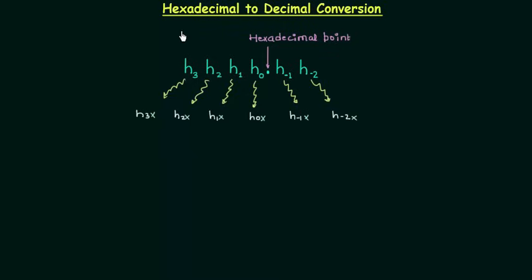In this presentation we will study hexadecimal to decimal conversion. Let's say this is the hexadecimal number. H0, H1, H2, H3 are the coefficients of the integer part. H-1 and H-2 are the coefficients of the fractional part, and we want the decimal equivalent of this hexadecimal number. I will multiply coefficient H0 by 16 raised to power 0, because 16 raised to power 0 is the weight of this position.